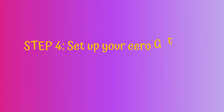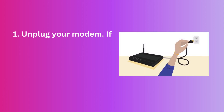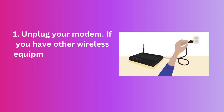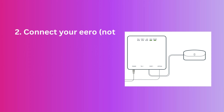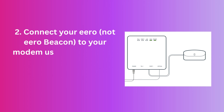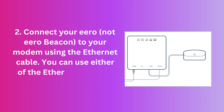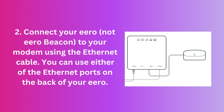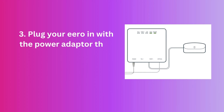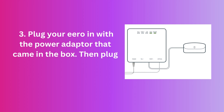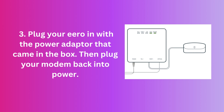Step 4: Set up your Eero gateway. First, unplug your modem. If you have other wireless equipment connected to your modem, please unplug it as well. Next, connect your Eero — not Eero Beacon — to your modem using the Ethernet cable. You can use either of the Ethernet ports on the back of your Eero. Then plug your Eero in with the power adapter that came in the box, and plug your modem back into power.